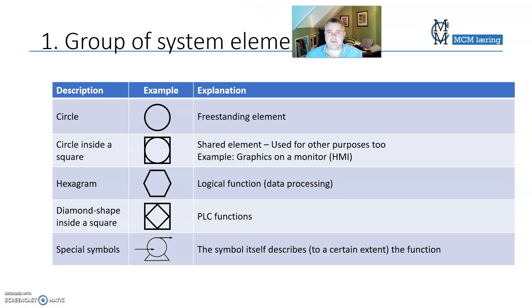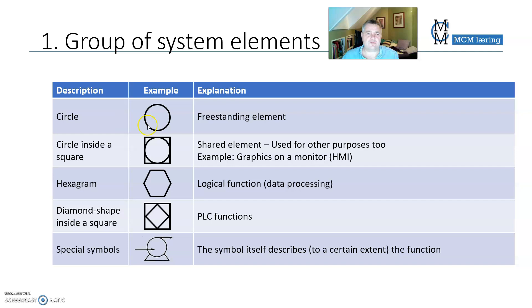The group of system elements. We have circle, diamond shape inside a square, and specialized symbols. A circle is a freestanding element, so it could be just, for example, a pressure sensor mounted directly on a pipe and freestanding without being connected to anything else.